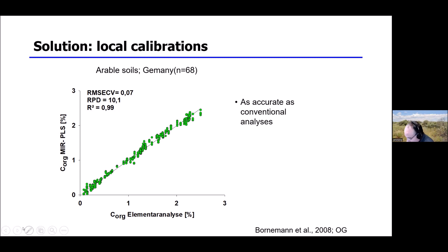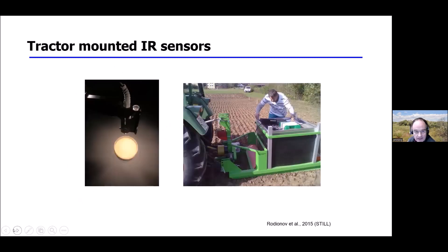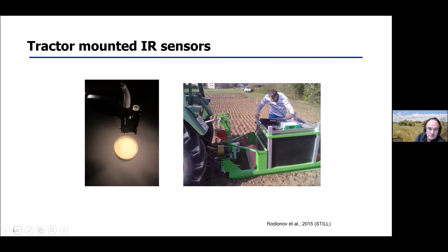You can then take this lab technology and mount it on tractors. Usually this is done with a light source, and to measure reflectance accurately you need to measure in the dark. Stefan Petzold, together with the Institute of Agricultural Engineering, constructed a dark chamber mounted behind the tractor with the sensor system inside. It projects light onto the soil, measures the reflectance spectra, and applies the same calibrations as in the lab to sense different soil properties while driving over the field.